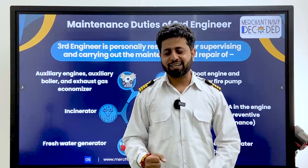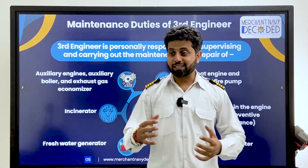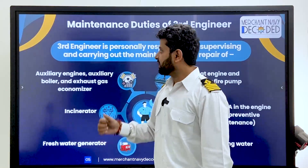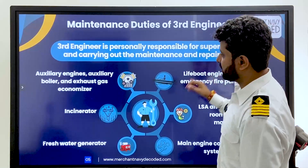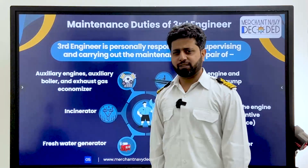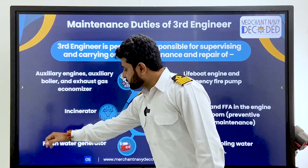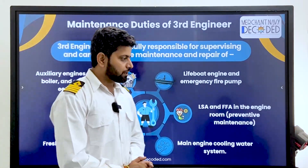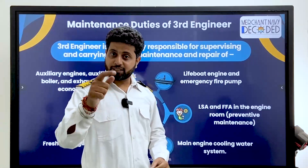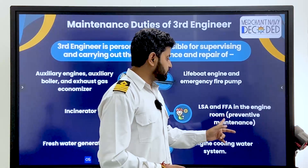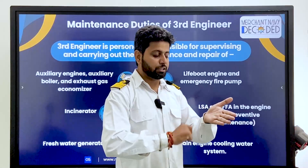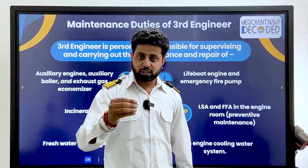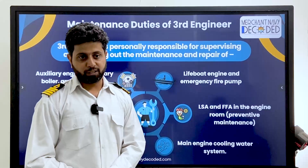When your second engineer or chief engineer gives you a direction, you can always discuss — say 'sir, I think this way, can we discuss further?' — but if they say no, just do it. Hopefully you find good leaders who are open to discussion and don't take it on their egos. Third engineer is personally responsible for supervising maintenance and repair of auxiliary engines, auxiliary boilers, and exhaust gas economizers. LSA and FFA checks in the engine room — fire extinguishers, EEBDs — must be done monthly. Main cooling water system checks, boiler water tests, and lube oil tests are all duties of the third engineer.